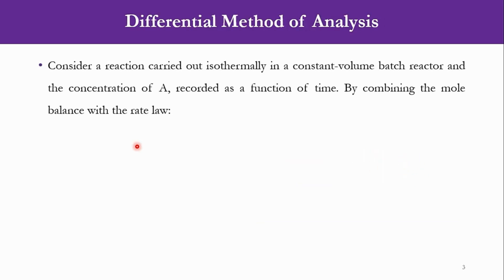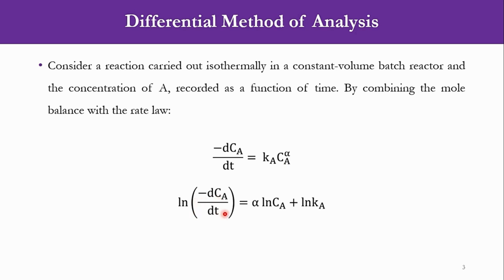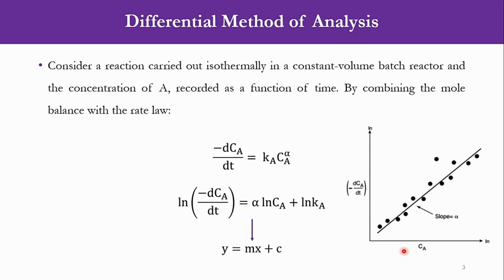Talking about the differential method of analysis, let's assume a reaction proceeding isothermally in a batch reactor having constant volume. The change in concentration of A is regarded as a function of time. Applying mole balance and rate law concepts combined, we get minus dCa/dt = kA · Ca^α, where alpha is the reaction order. Taking natural log gives: ln(−dCa/dt) = α·ln(Ca) + ln(kA), which is the straight line equation y = mx + c. The slope of the line will be alpha.